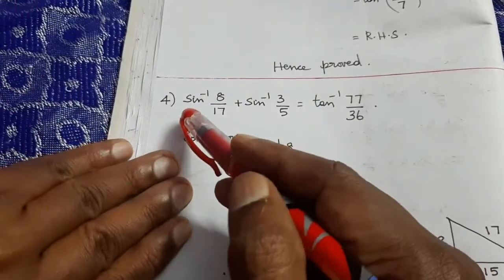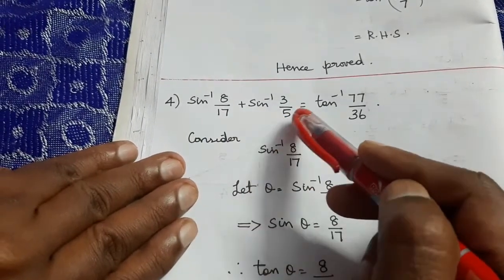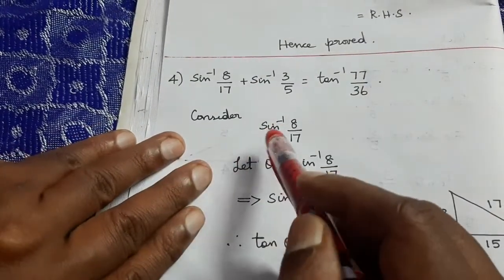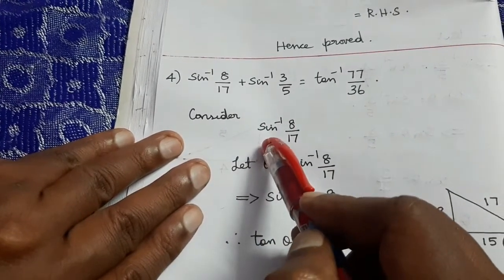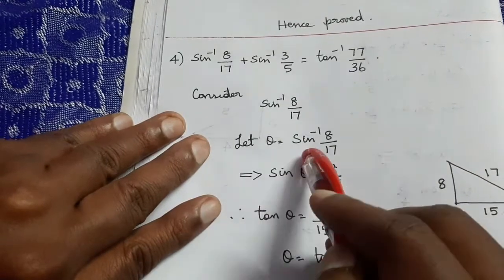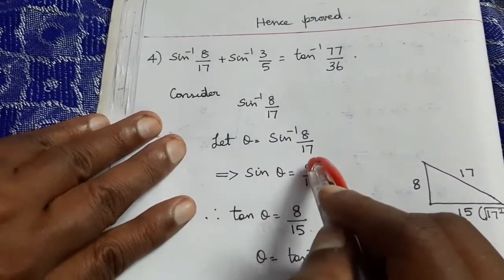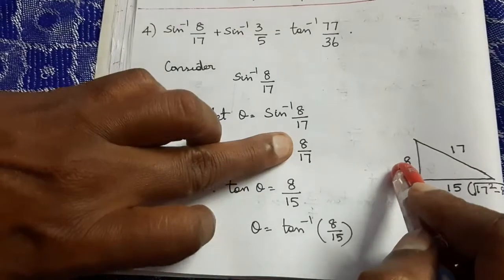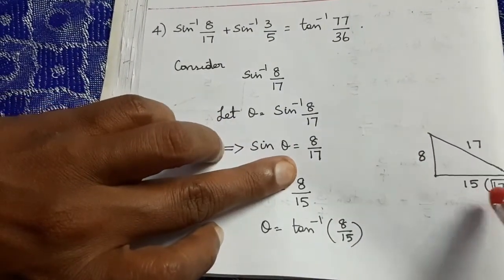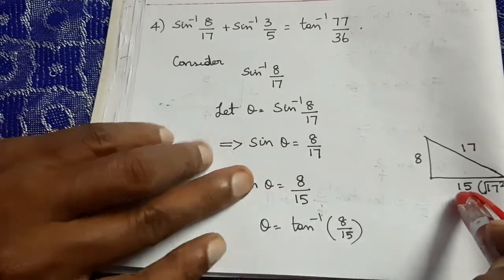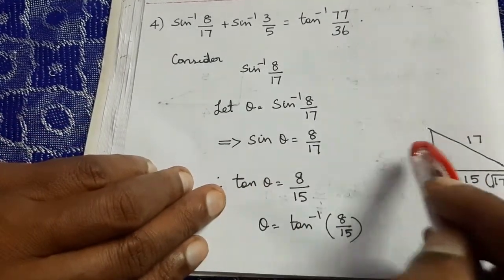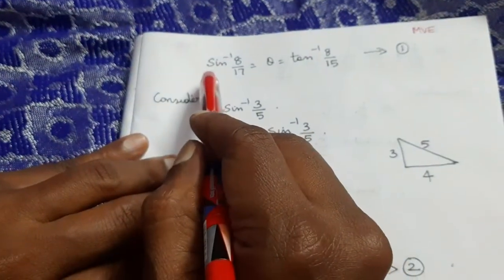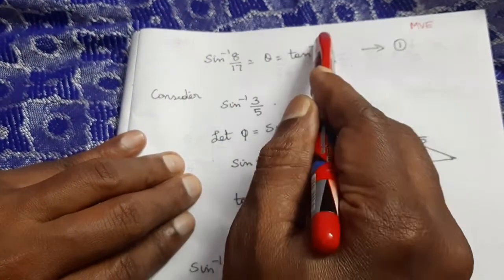Question 4: Prove that sin⁻¹(8/17) + sin⁻¹(3/5) = tan⁻¹(77/36). Let θ = sin⁻¹(8/17), so sin θ = 8/17. In a right-hand triangle, opposite = 8, hypotenuse = 17. Adjacent = √(17² − 8²) = 15. So tan θ = 8/15, giving sin⁻¹(8/17) = tan⁻¹(8/15).